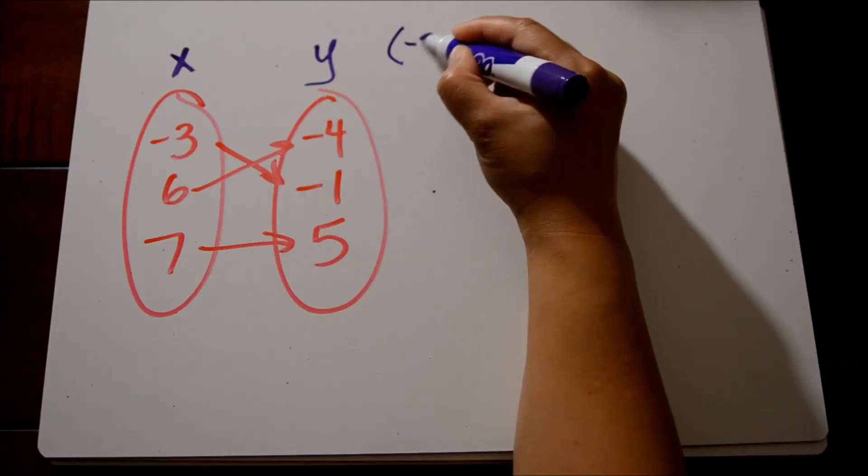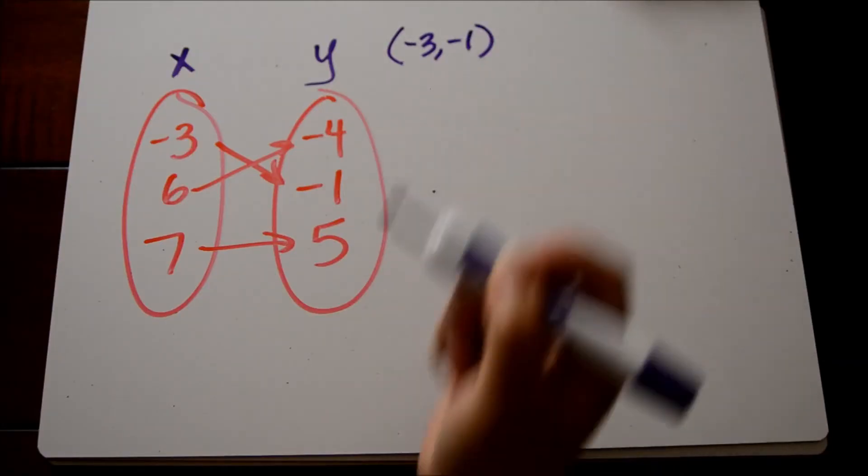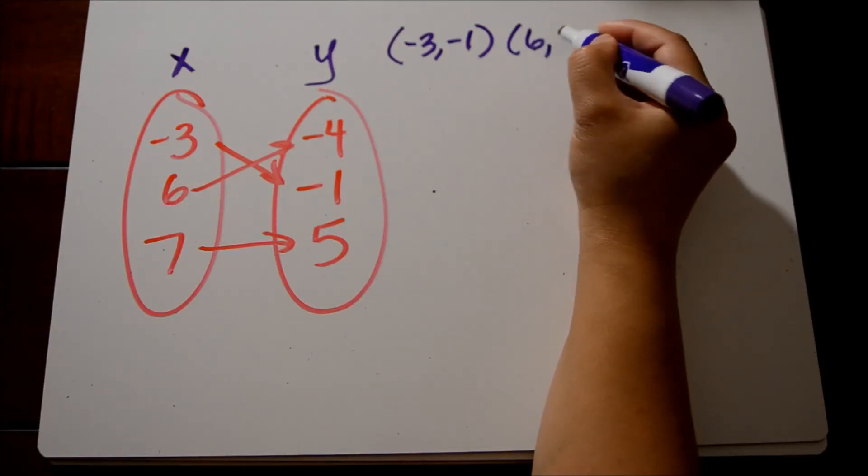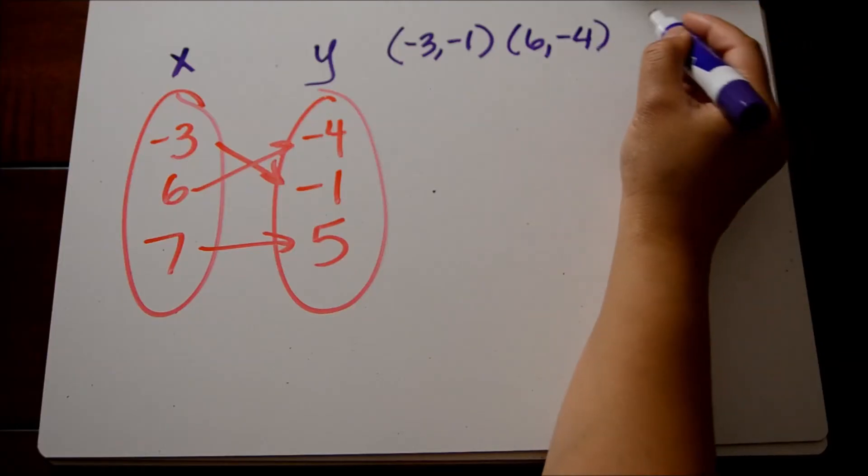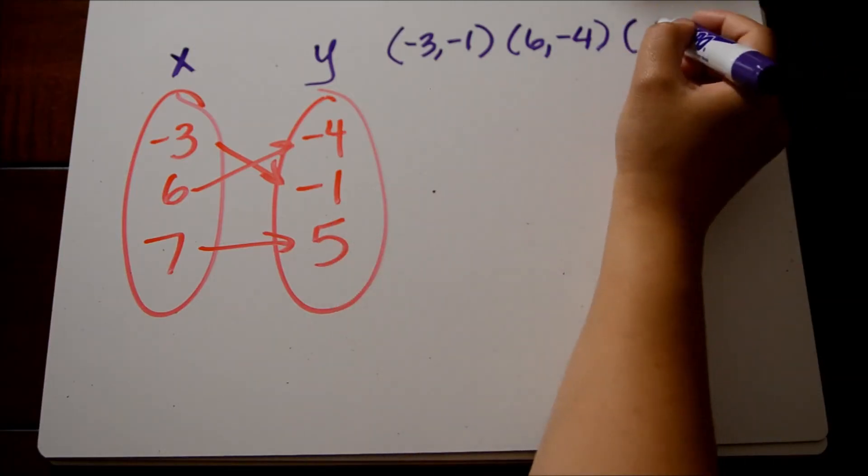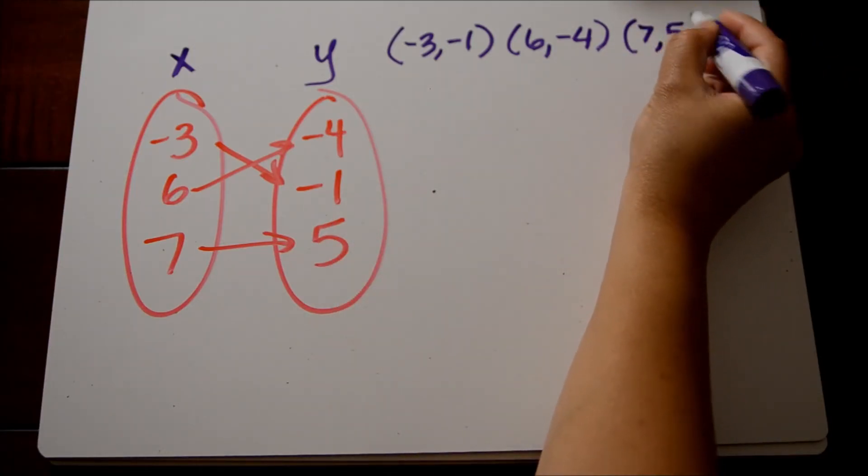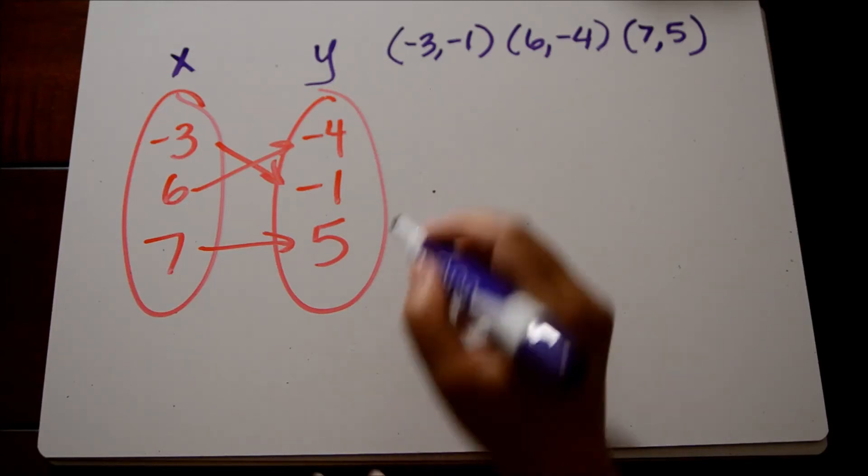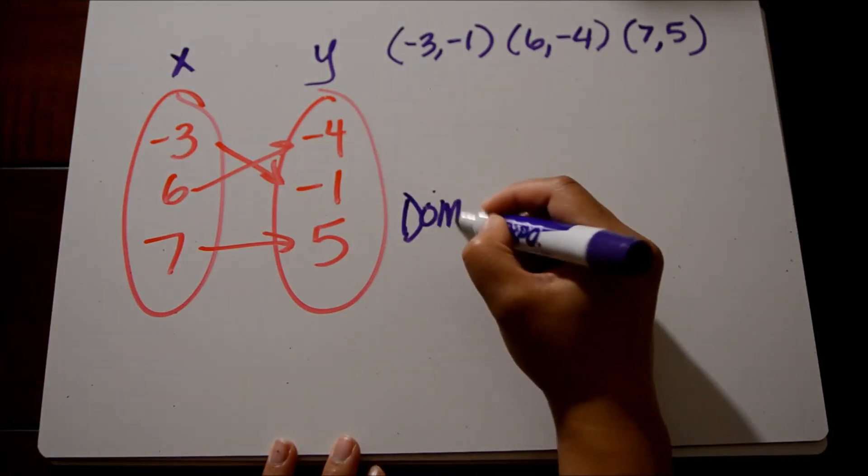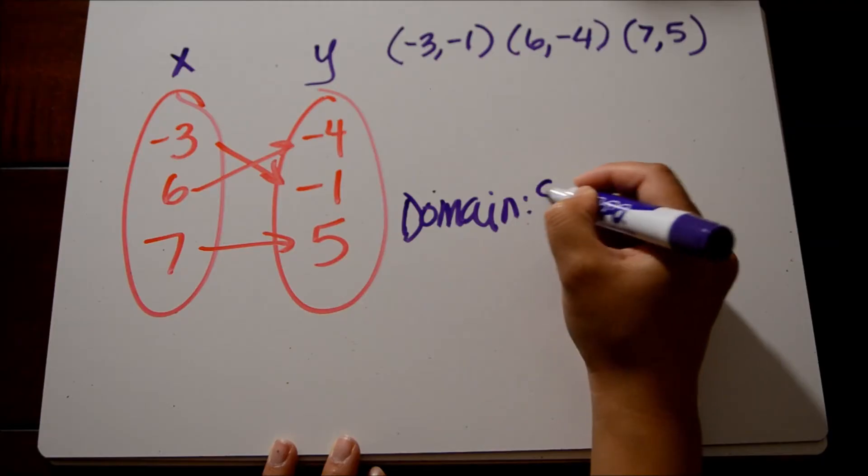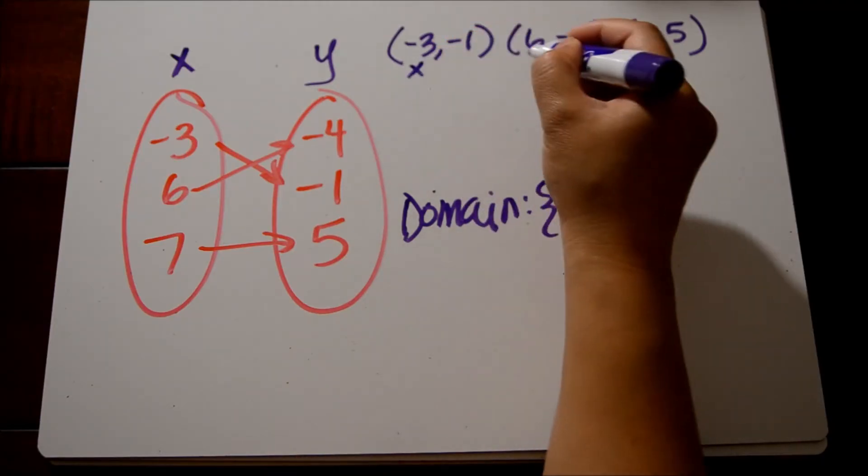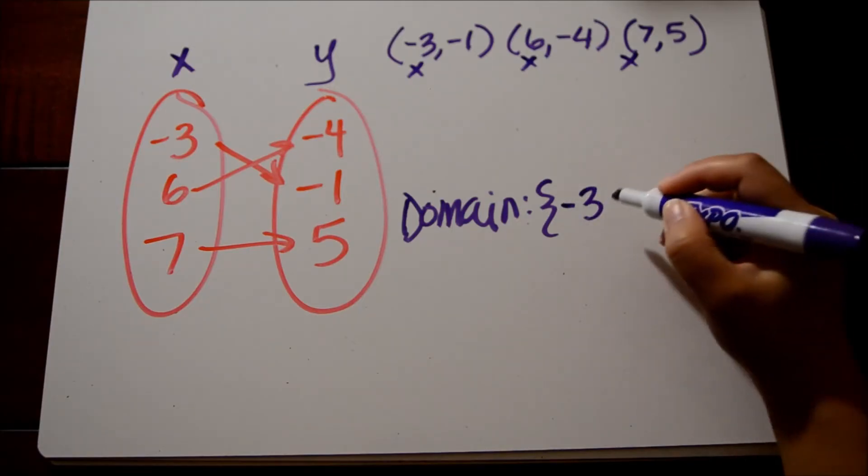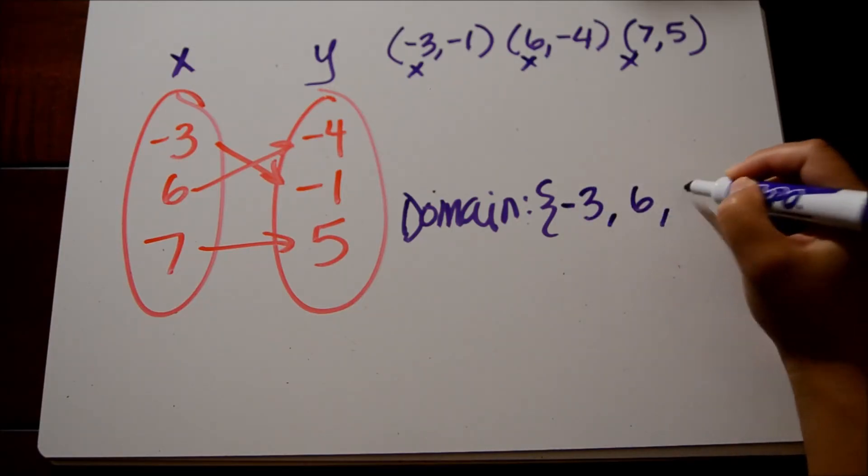So let's just list these out as ordered pairs. Negative 3, negative 1, 6 is paired with negative 4, so 6, negative 4, and lastly 7 is paired with 5. So our last ordered pair is 7, 5. We're going to write domain and range just like we did on our last example because here we have a set of ordered pairs. So we write from least to greatest, that's going to be negative 3, 6, and 7.